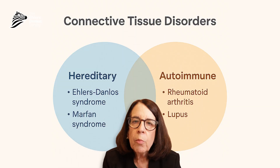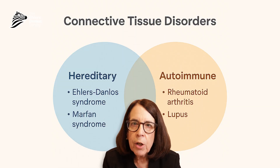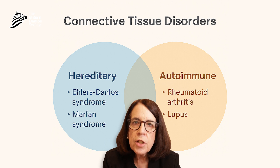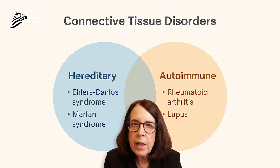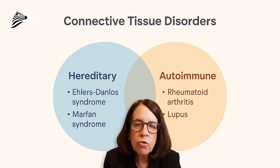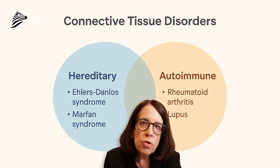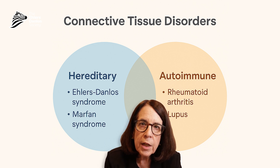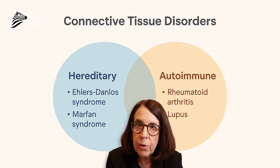The Ehlers-Danlos syndromes are among the conditions that we call the hereditary disorders of connective tissue, because these are the genetically defined disorders of the connective tissue. We make the distinction between the hereditary disorders of connective tissue and the acquired disorders of connective tissue, which are typically autoimmune conditions like rheumatoid arthritis and systemic lupus erythematosus, for example.